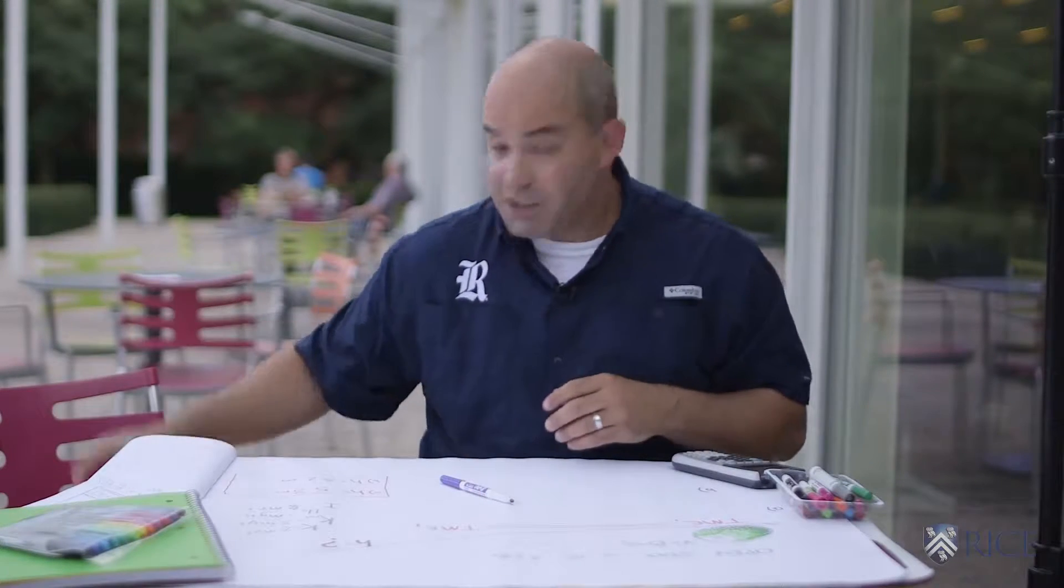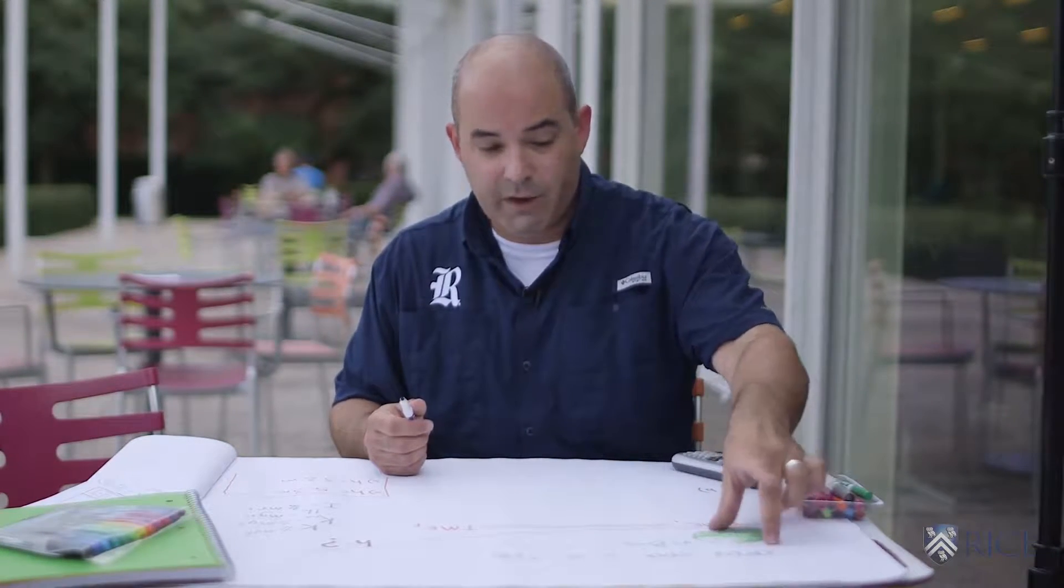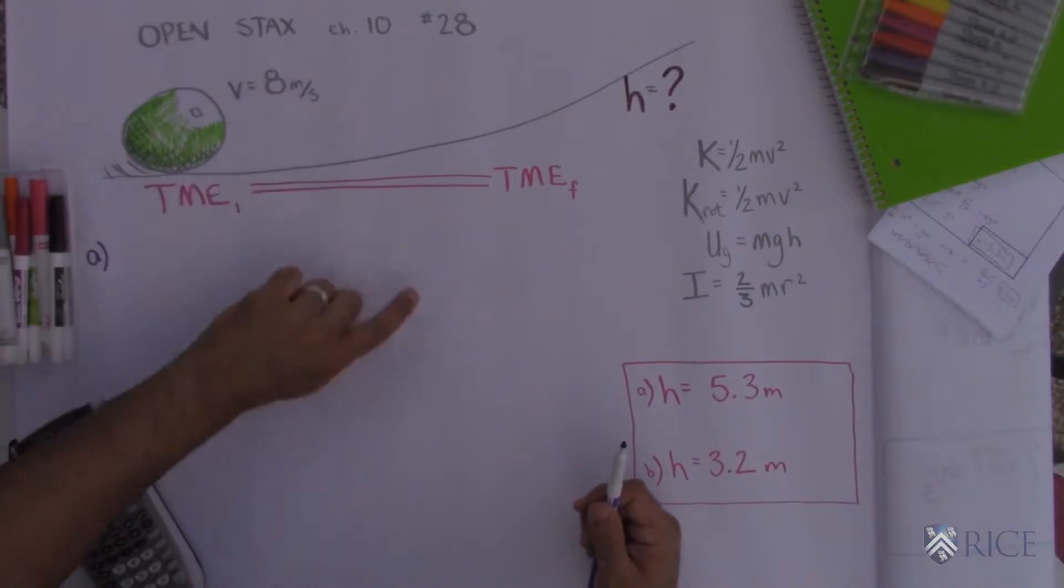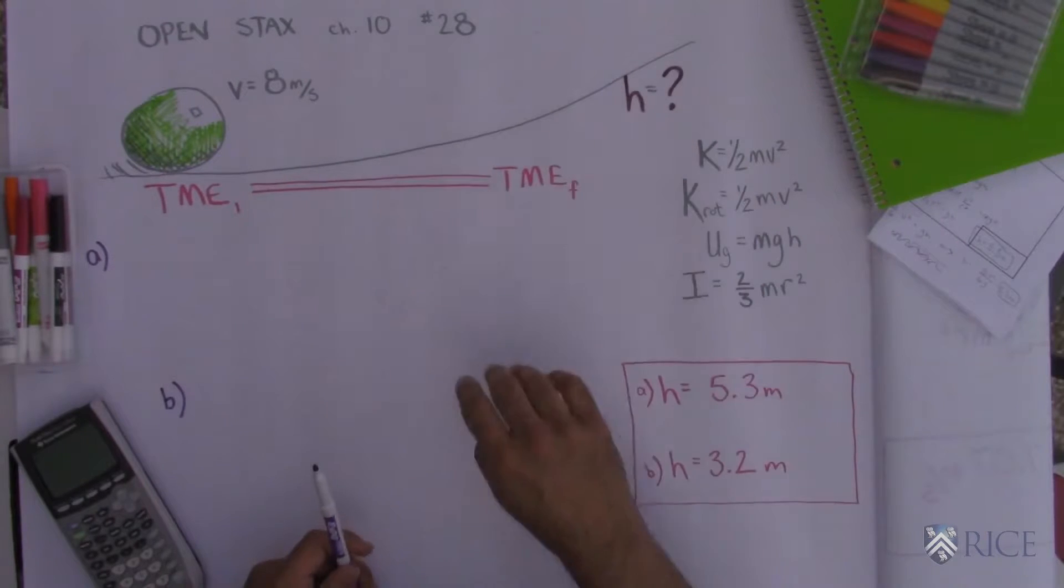Welcome back, this is OpenStax chapter 10 number 28. In this problem there is a sphere rolling over here. It has a velocity of 8 meters per second and we have to figure out what height it gets to.